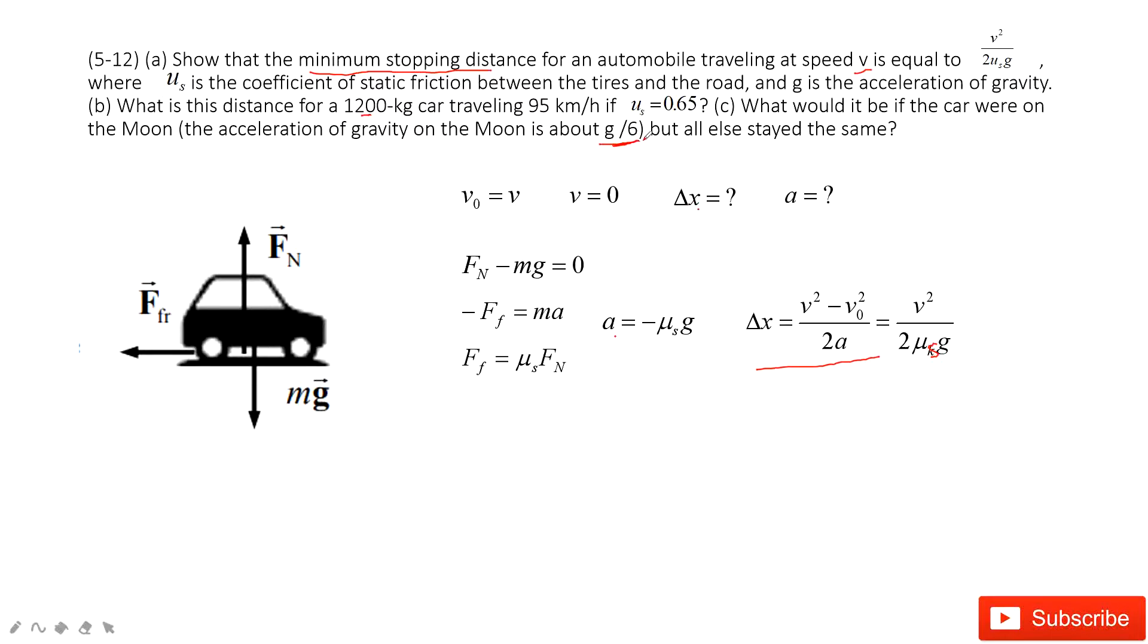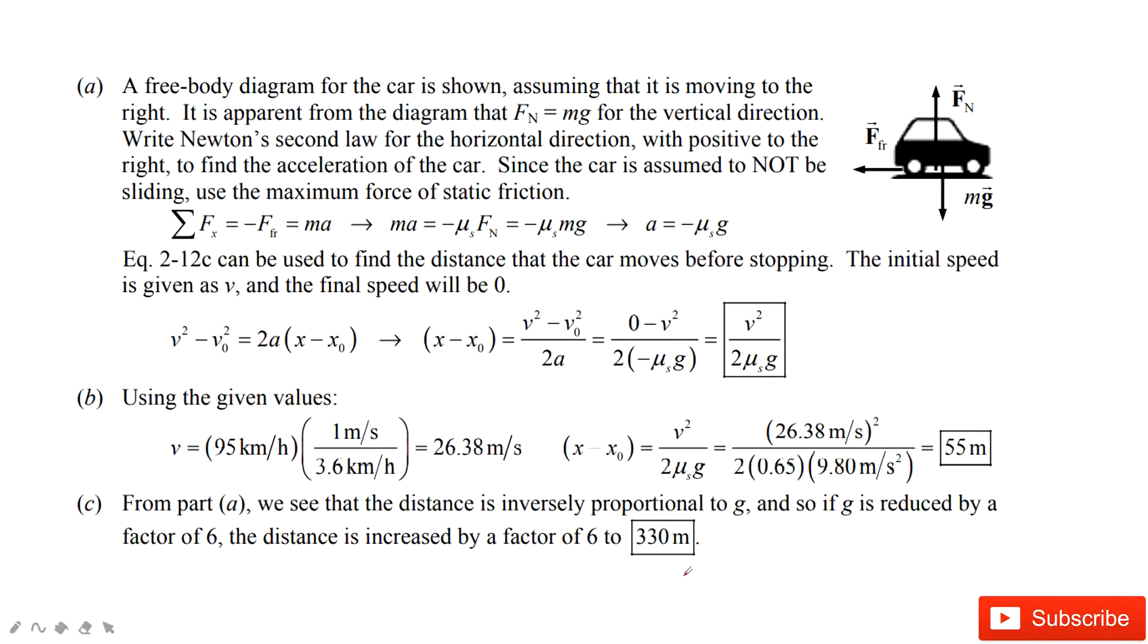So that is 9.8 divided by 6 for the acceleration on the moon, and we can get 330 meters. This is after we input the quantities, we get the final answers.